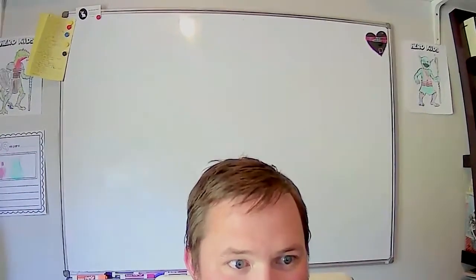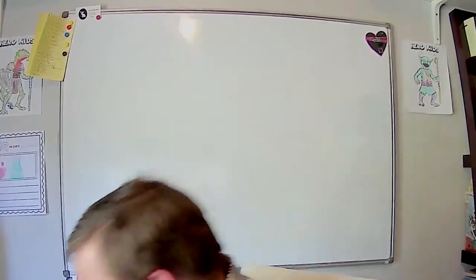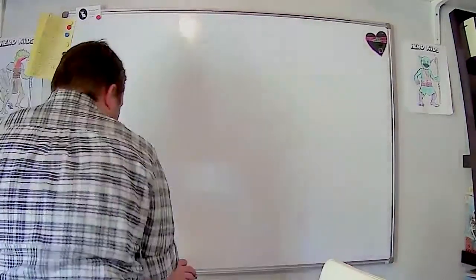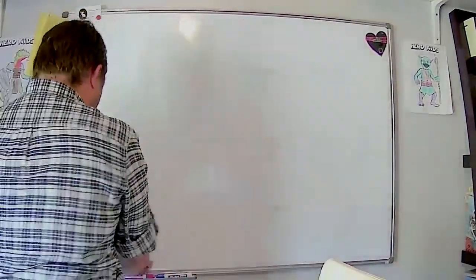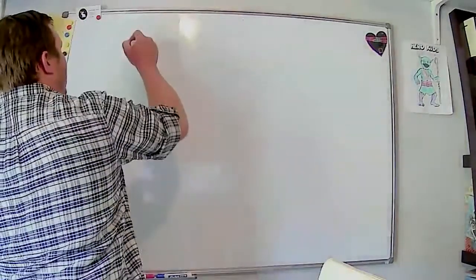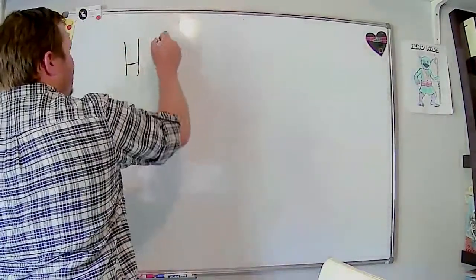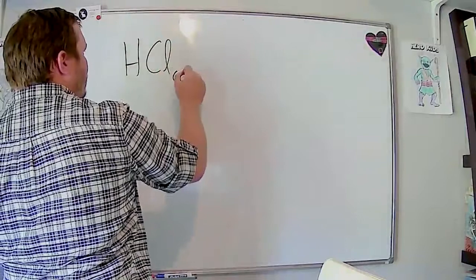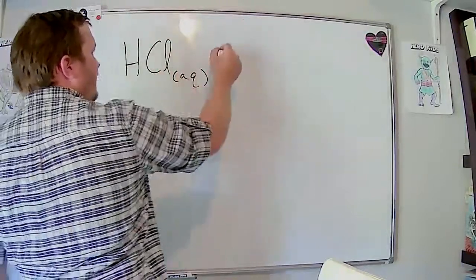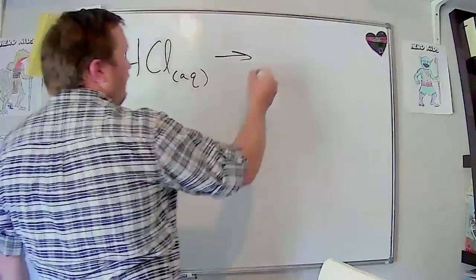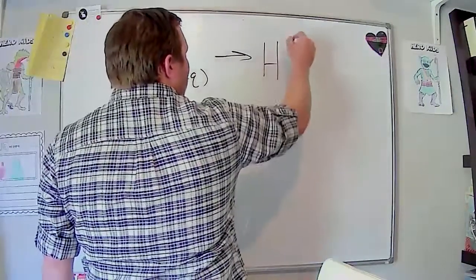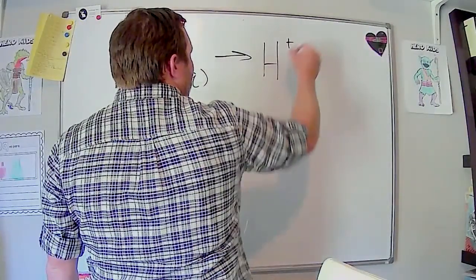When you put an acid in water, like we've mentioned before, we use HCl as an example. We put HCl in water. A lot of times we wind up writing it just this way, as it's dissociating like it's an ionic compound.